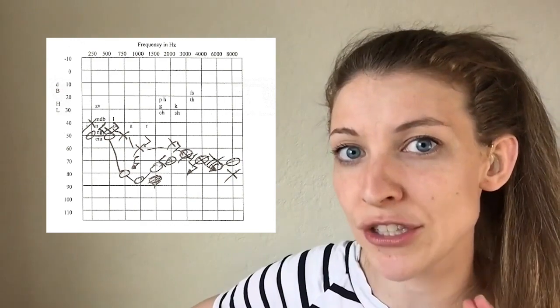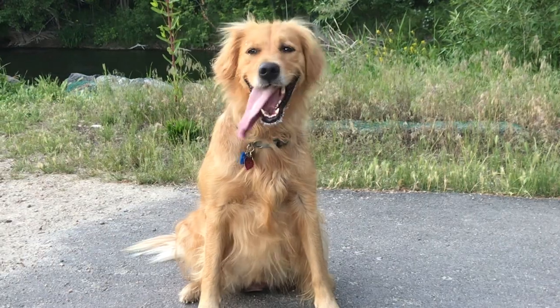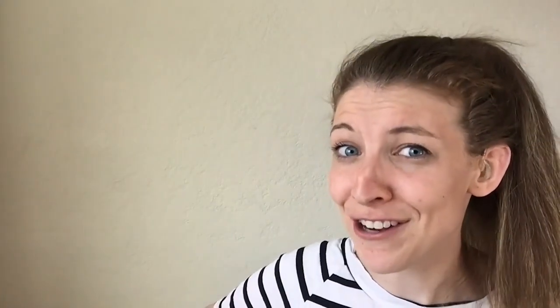To give you a gauge: 10 decibels is breathing, 20 decibels is a whisper, 50 decibels is a quiet office, 60 decibels is conversational speech, 80 decibels is about the sound of a vacuum cleaner, and 105 decibels is the sound of a motorcycle. Fun fact: you should be wearing ear protection at any sound above 85 decibels.